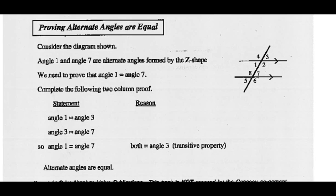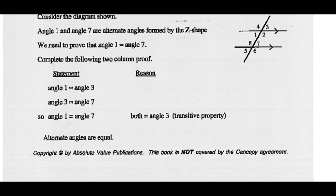Consider the diagram shown. Angle one and angle seven are alternate interior angles — they form the Z-shaped pattern. We need to prove that angle one equals angle seven. We'll complete a two-column proof: the left column contains statements we're making, and the right column is the reason why we can make each statement. The first statement is angle one equals angle three, because those are vertically opposite angles, and we know vertically opposite angles are equal.